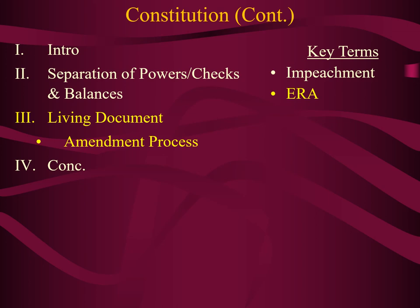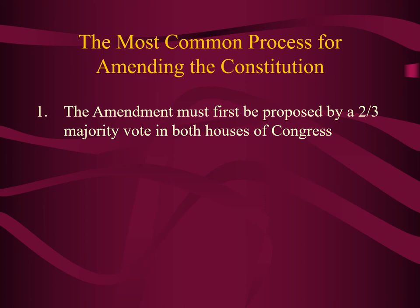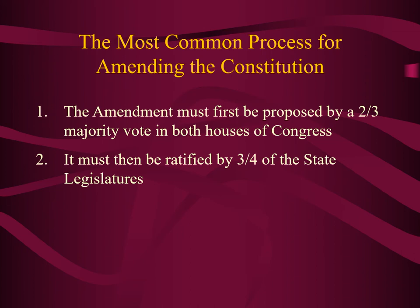Now that we've explored separation of powers and checks and balances, the Constitution is also a living document through the amendment process. It can be changed and has been changed several times. The most common two-step process requires a two-thirds majority vote in both the House and Senate for the proposal, and then ratification by three-quarters of the state legislatures to become part of the Constitution.